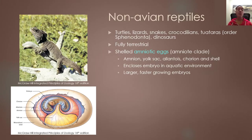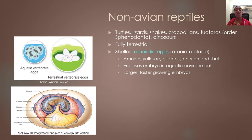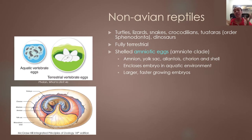Now that we've talked about quasi-terrestrial amphibians, let's talk about the fully terrestrial reptiles, beginning with the non-avian reptiles. These include turtles, lizards, snakes, crocodiles, tuataras, and dinosaurs. After this, we'll talk about the avian reptiles. Birds are a form of reptile descended from a shared common ancestor with non-avian reptiles, and are actually very closely related to crocodilians. To make reptiles a monophyletic group you have to include both avian and non-avian reptiles; if you refer to only non-avian reptiles, it's a paraphyletic group because birds are excluded.